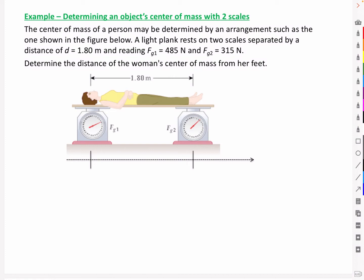The center of mass of a person may be determined by an arrangement such as the one shown in the figure below. A light plank rests on two scales separated by a distance of d equal to 1.8 meters, with readings Fg1 for the scale on the left of 485 newtons and Fg2 for the scale on the right equal to 315 newtons. Determine the distance of the woman's center of mass from her feet.